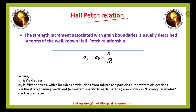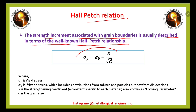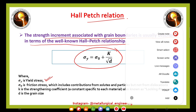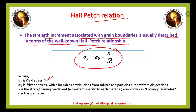Now we will see the Hall-Petch relation. The strength increment associated with grain boundaries is described by the Hall-Petch relation: sigma Y equals sigma 0 plus k divided by the square root of d. Here, sigma Y is the yield stress, sigma 0 is the frictional stress — which includes contributions from solutes and particles but not from dislocations — and k is the strengthening coefficient (locking parameter), a constant specific to each material, and d is the grain size.